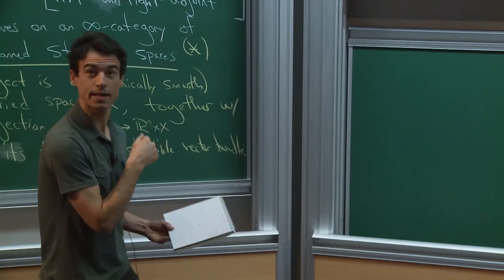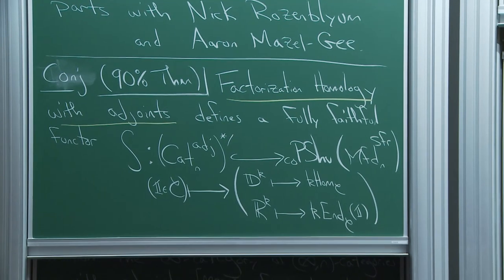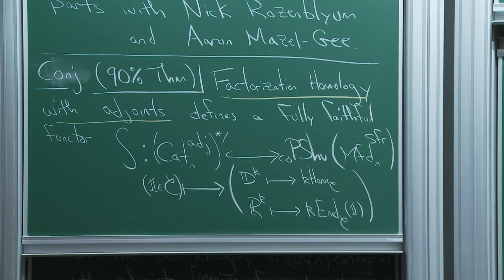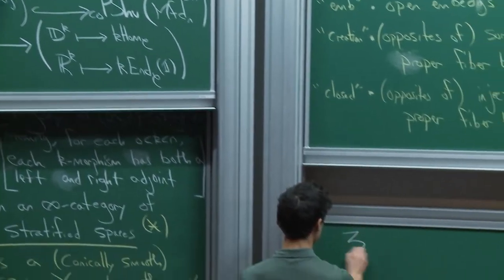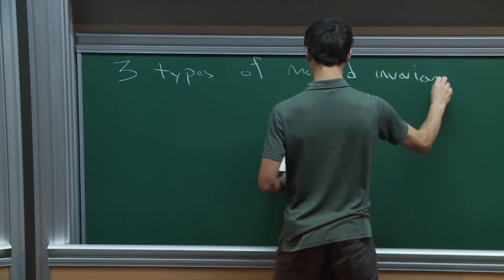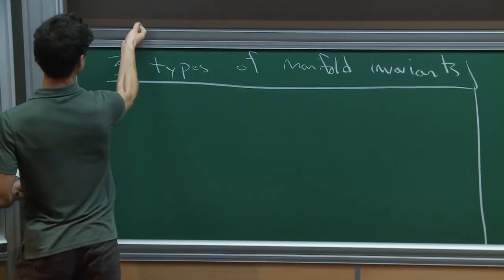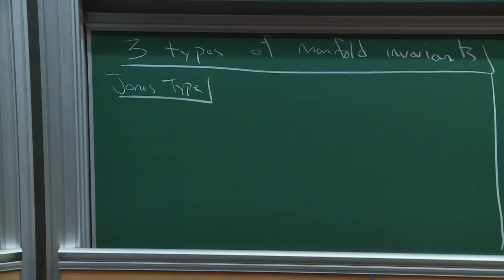Next I'd like to talk about how that result is related to three possibly familiar constructions of TQFTs. My goal is to see how to use this result to capture familiar things and also extend your imagination to what else might be capturable. There are three types of manifold invariants easily captured by that result.